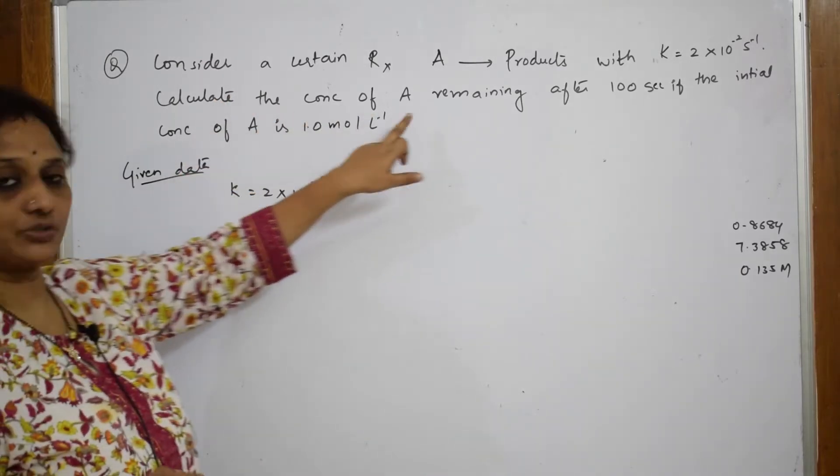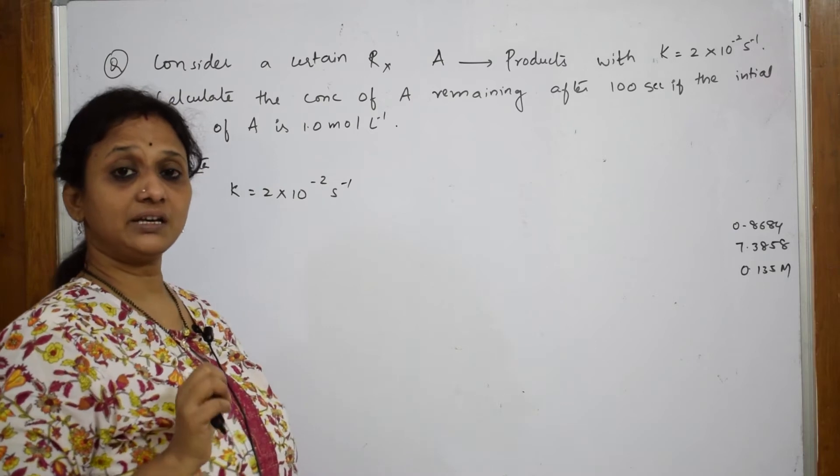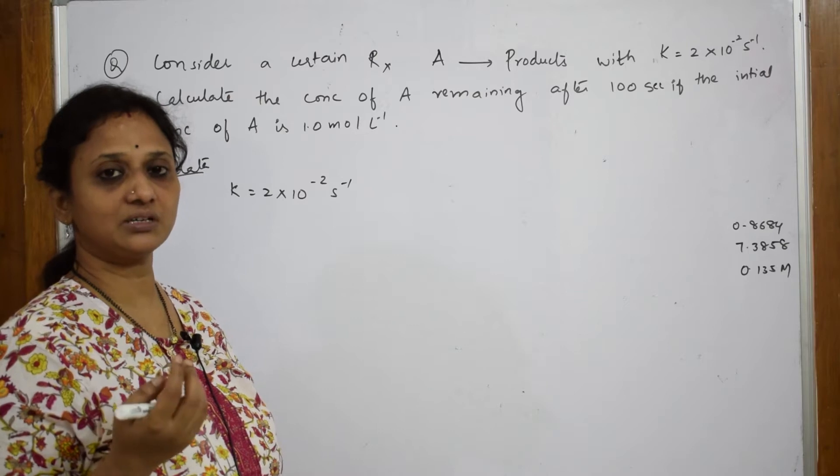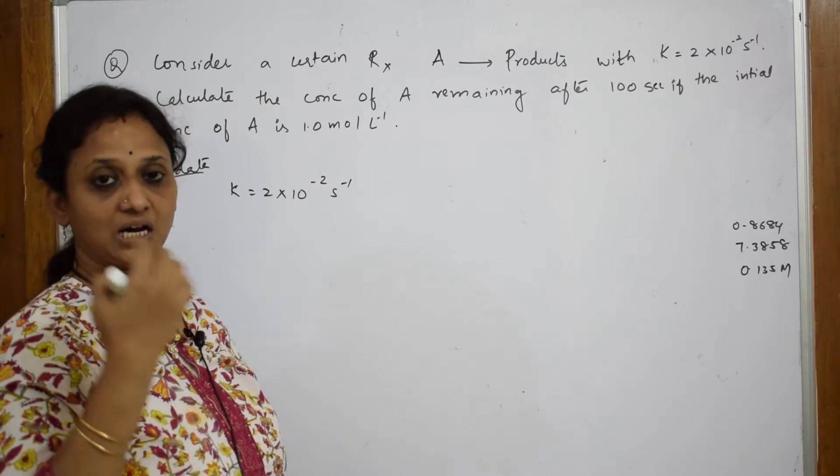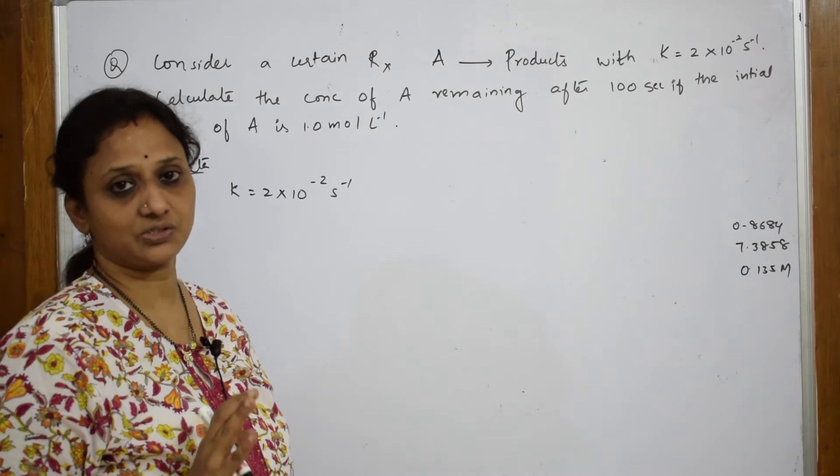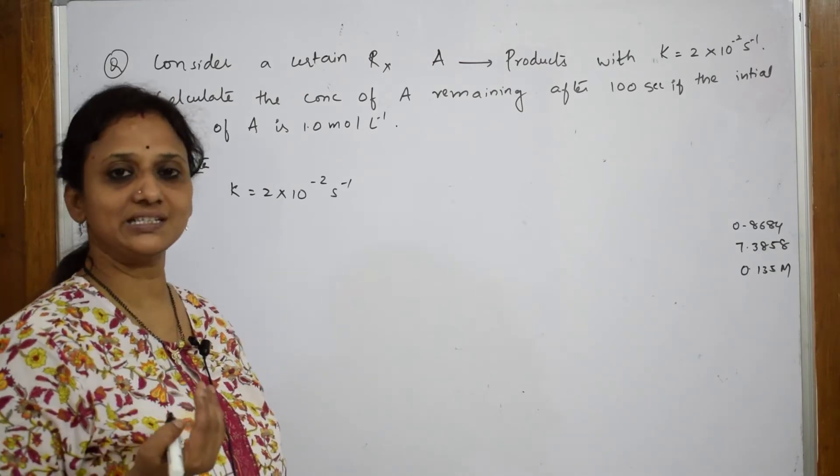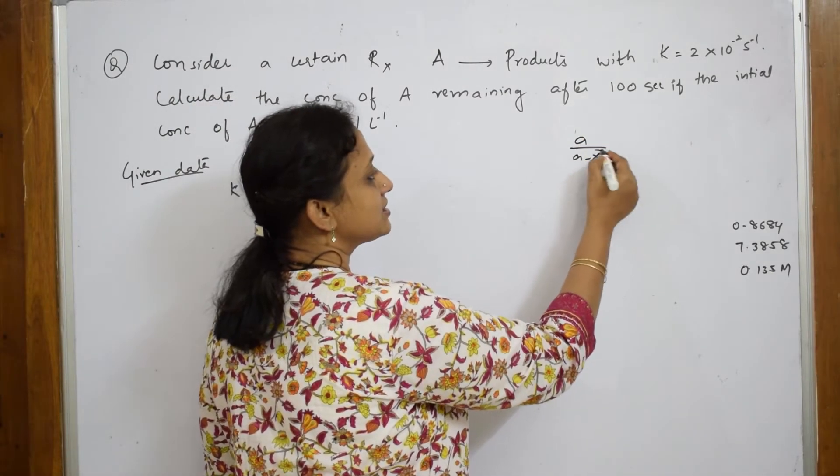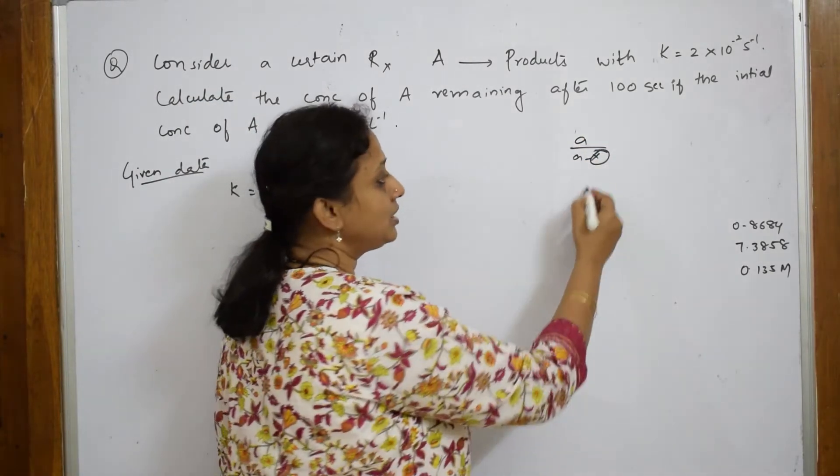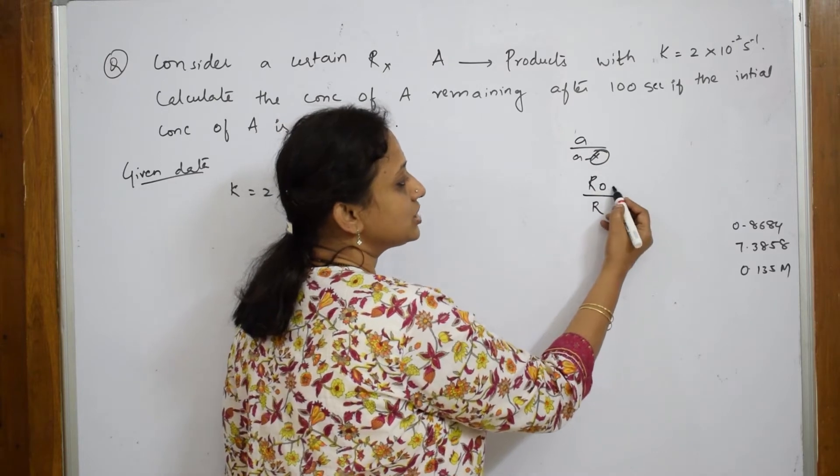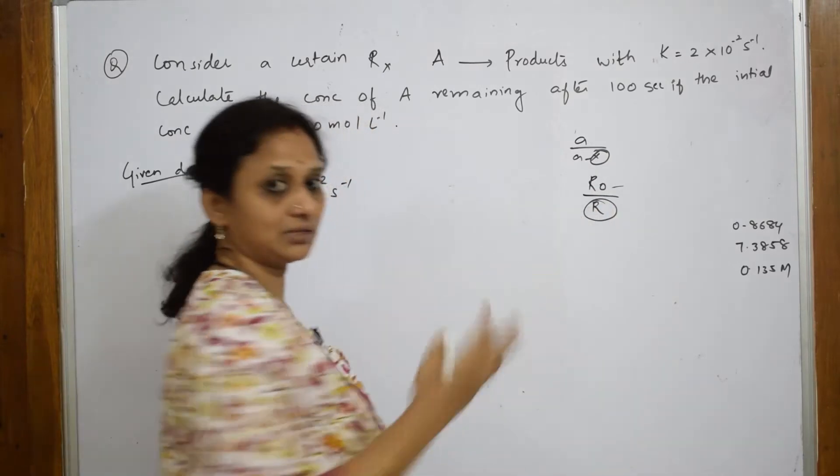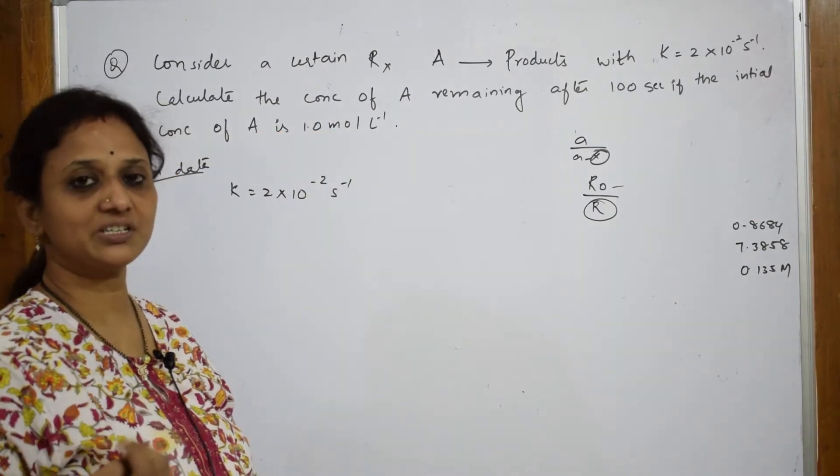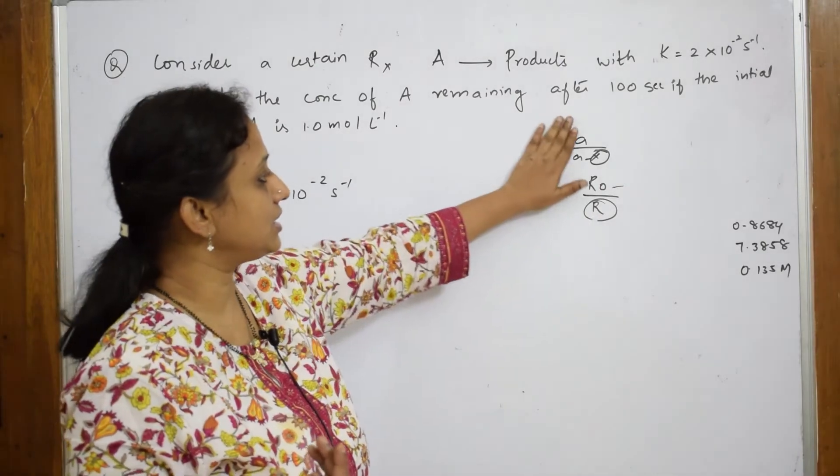Calculate the concentration of A remaining. Remember, in the rate equation we have two terms, one is A₀ by A minus x, or there is another equation R₀ by R. That R is your remaining concentration. This is the amount of reactant consumed. This is initial concentration and the remaining amount after that particular reaction. They are asking us to find out this quantity.